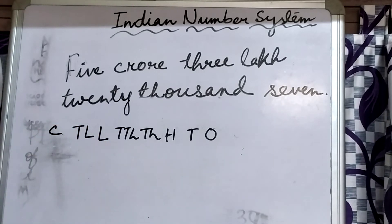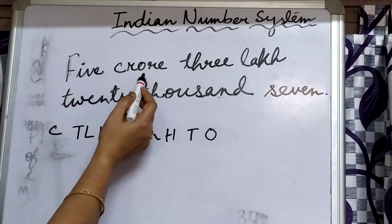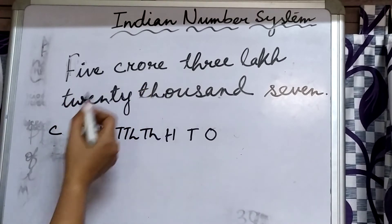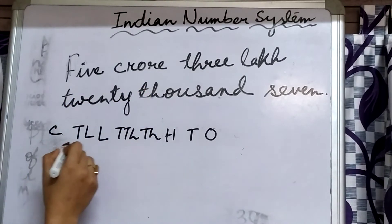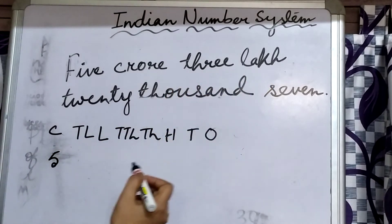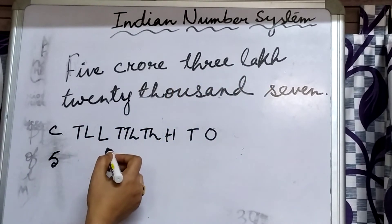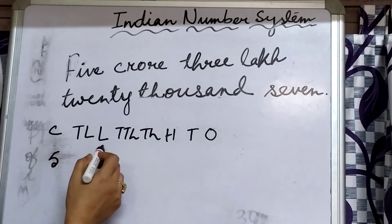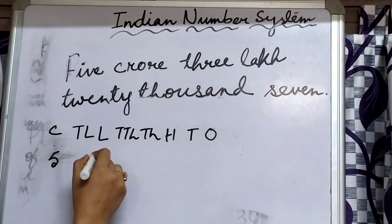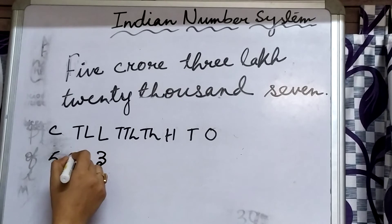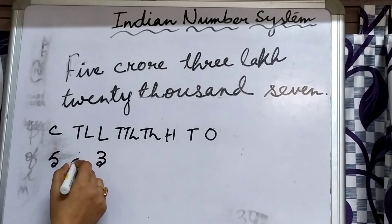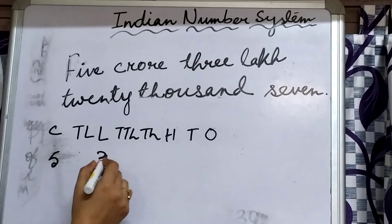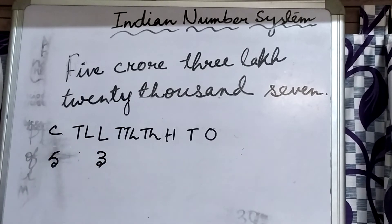Now, five crores — in crore's place we will write five. Then three lakhs — in lakhs place we have to write three. There are two places: ten lakhs and lakhs. We write three in the lakhs place, not ten lakhs place, because writing it there would make it thirty lakhs. Then twenty thousand — we write twenty in the thousands place.